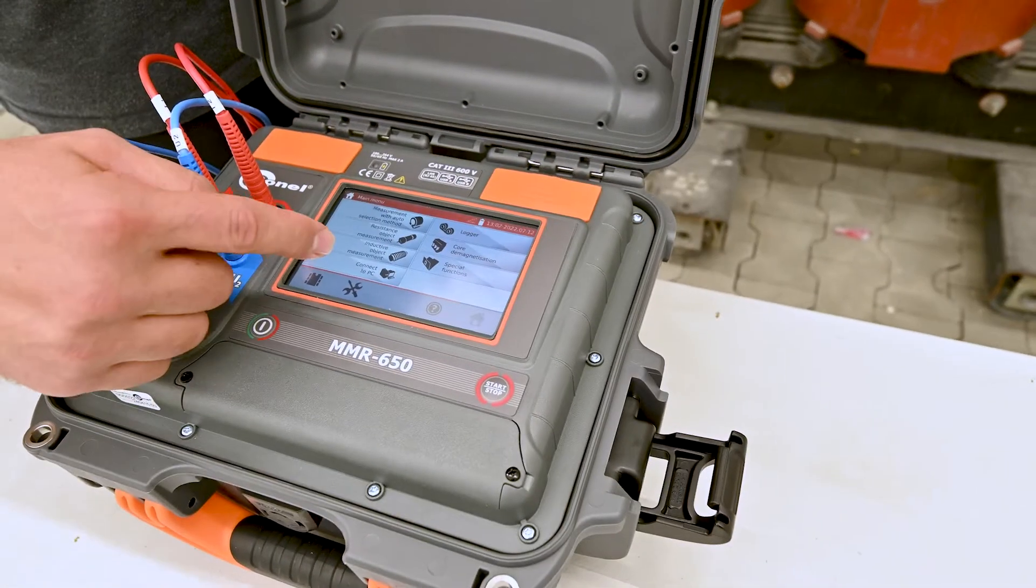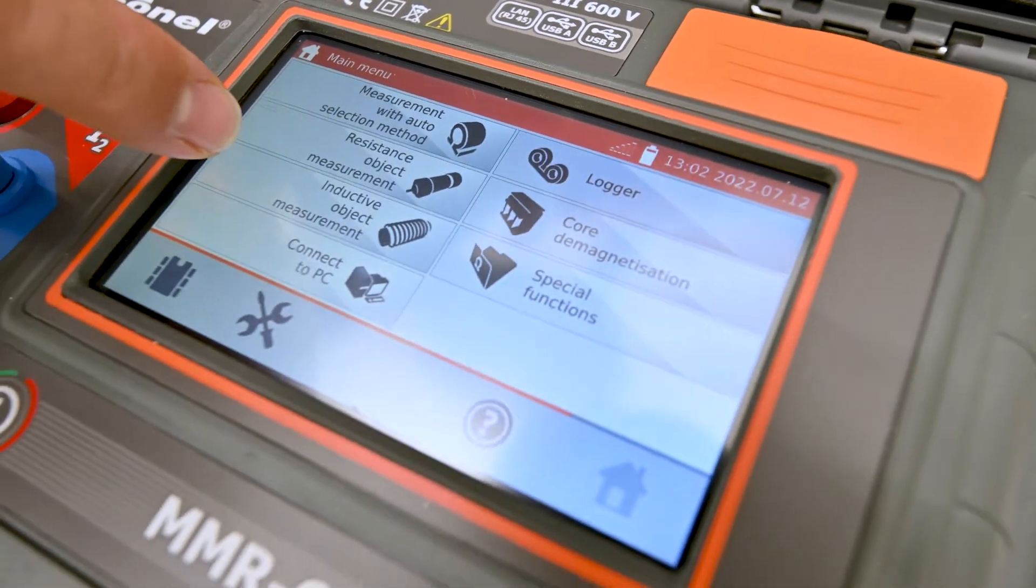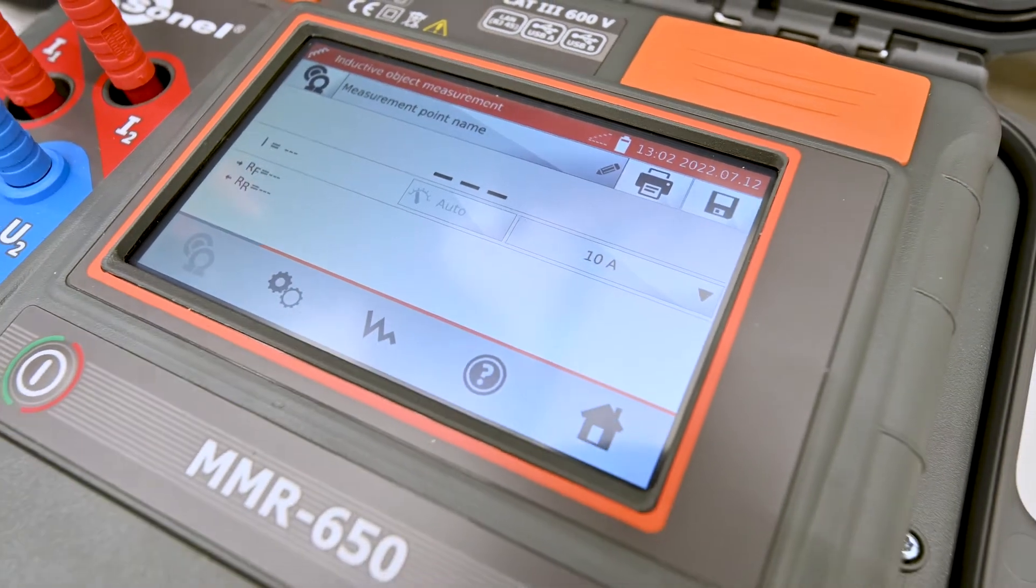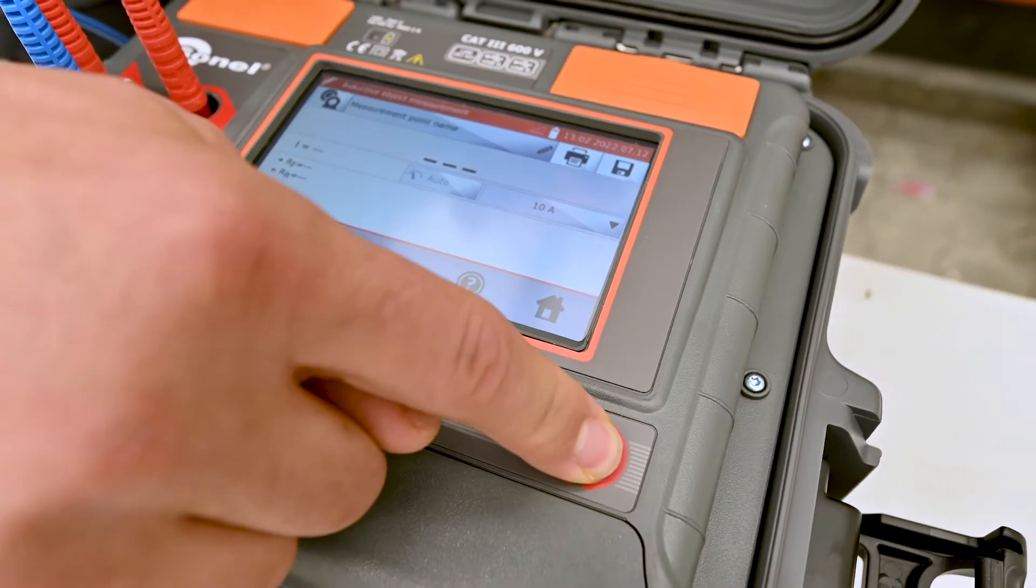On the instrument, we know we have an inductive object, so instead of asking the instrument to auto-detect, we're just going to select inductive object measurement. We're going to use 10 amp test current and start.